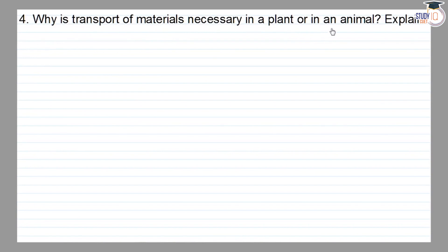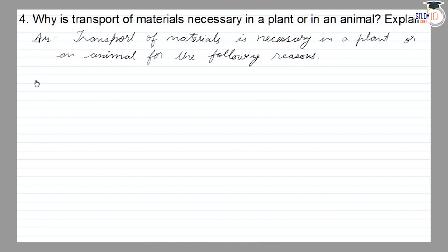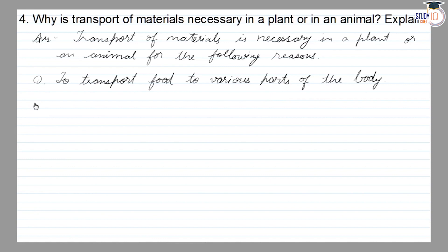Why is transport of materials necessary in a plant or in an animal? Transport of materials is necessary for the following reasons: the first reason is to transport food to various parts of the body, and the second point is that animals need food.